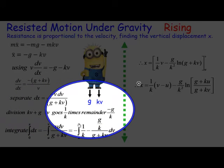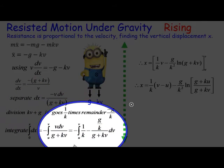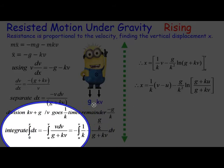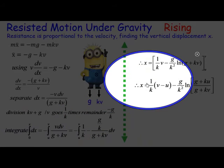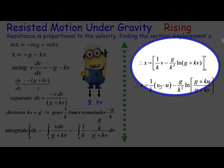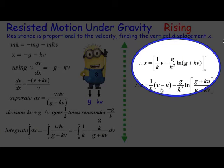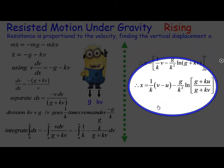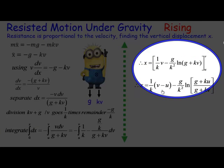You'll see that v will go - well, kv plus g will go into v 1 on k times and there'll be a remainder of minus g on k. And if you look down here, this is where I've actually put it into the integral, so we're going to have to integrate these expressions.